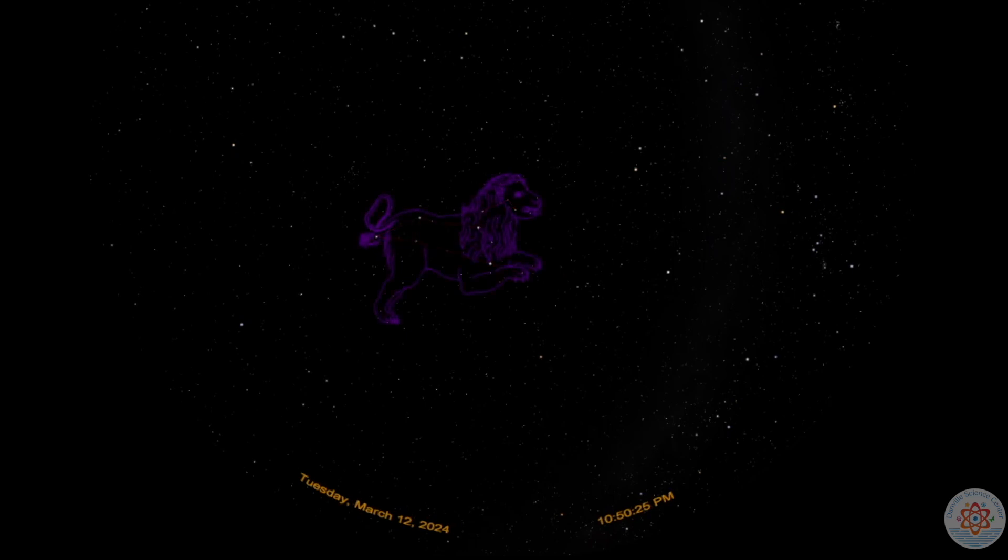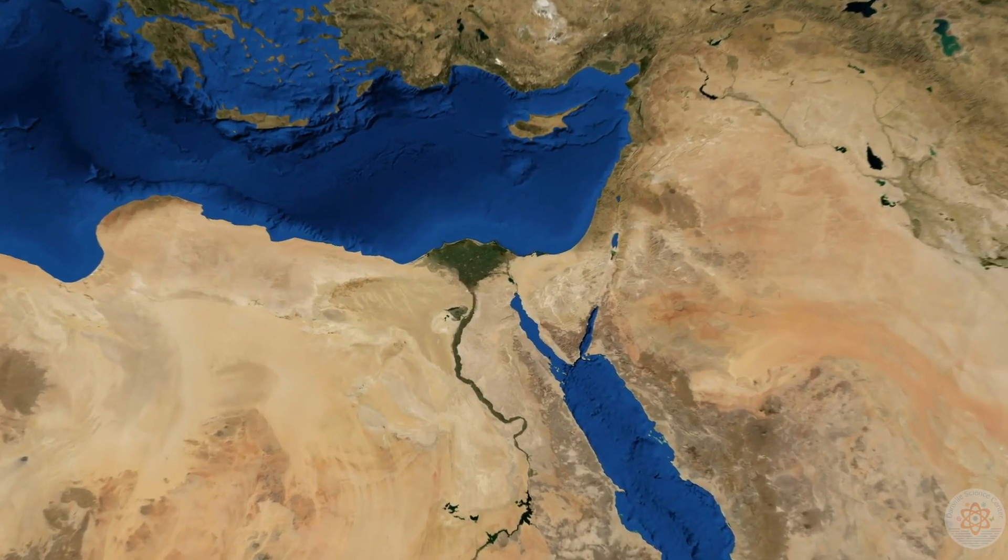In fact, ancient Egyptians held Leo in high regard. The sun resides within the bounds of Leo during the hottest time of the year, which is also a time when the Nile River experiences flooding.